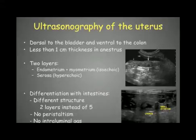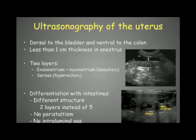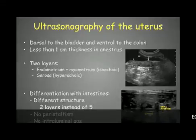The uterus is located dorsal to the bladder and ventral to the colon. As we can see in this image, here we have the urinary bladder, the uterus, and the colon, which is easily recognized by the gas located in its lumen.